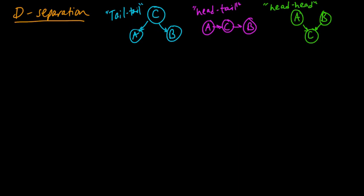In all of them, we were thinking about what happened when we conditioned on C. In the tail-to-tail and head-to-tail cases, we found that A and B were conditionally independent given C. In the head-to-head case, they were marginally independent. The D-separation criterion is a vast generalization of these.